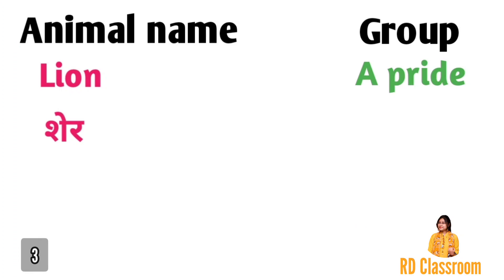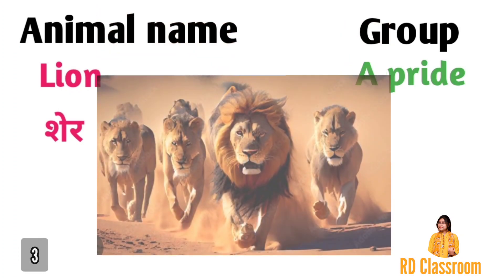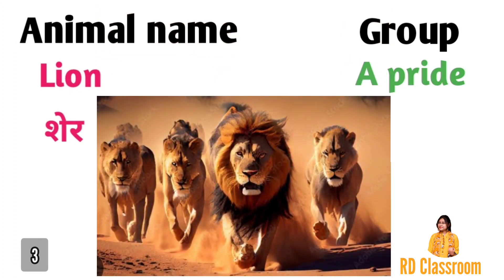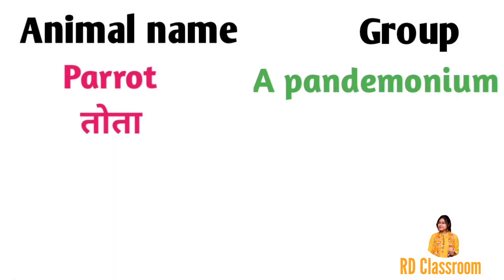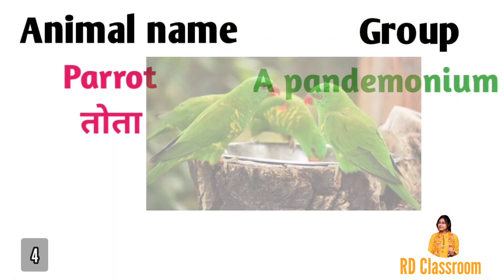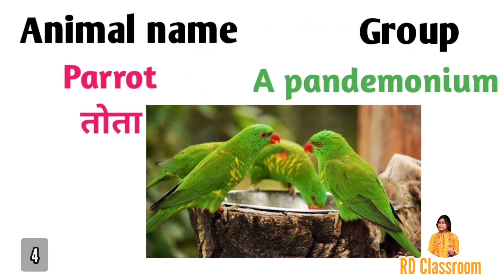Number three is lion, ya fir sher, jiske group ko kaha jata hai a pride. Number four is parrot, ya fir tota, jiske group ko kaha jata hai a pandemonium.